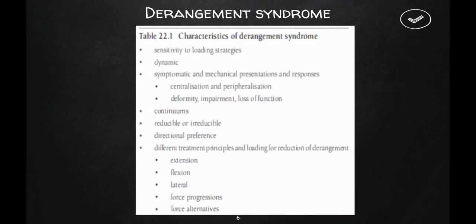Centralization and peripheralization will be seen in derangement syndrome. There may also be deformity impairment, loss of function, and pain can be continuous. Derangement can be reducible or irreducible. Directional preference may be present — for example, if flexion increases pain, then extension movements will be pain-relieving. That is called directional preference. Treatment principles include extension principle, flexion principle, lateral principle, force progression, and force alternatives.